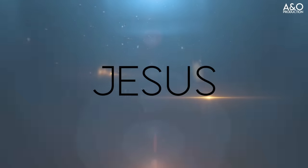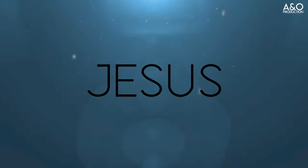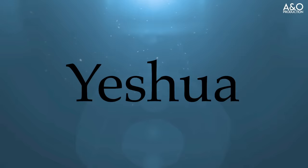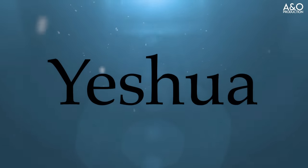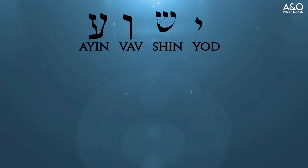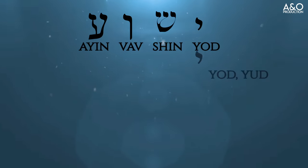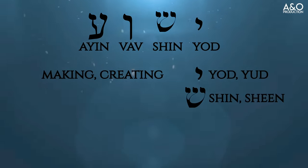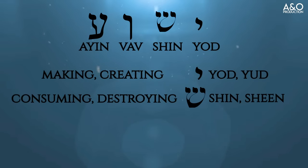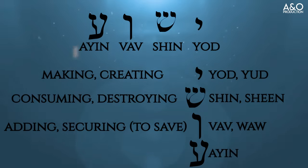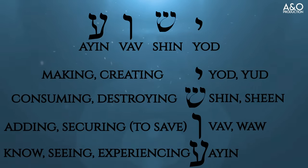Let us examine the name of Jesus as it is written in Hebrew and a particular claim that Jesus makes about Himself. Jesus' name is pronounced Yeshua in the Hebrew. His name is formulated from the Hebrew letters Yud, Sheen, Wa, and Ayin. Yud represents the idea of making or creating. Sheen represents the idea of consuming or destroying. Wa represents the idea of adding or securing. Ayin represents the idea of knowing, seeing, or experiencing.